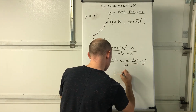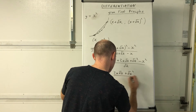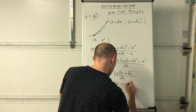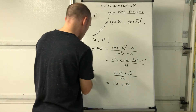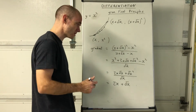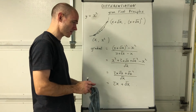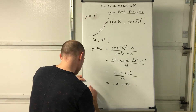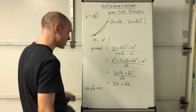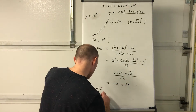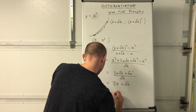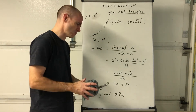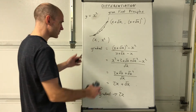Simplifying the expression: x² minus x² cancels, leaving 2x·delta x + delta x² over delta x. Dividing through by delta x gives 2x + delta x. As delta x tends towards zero, this term also tends to zero, so the gradient tends towards 2x. That's essentially what first principles is all about.